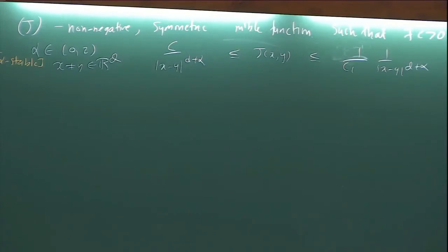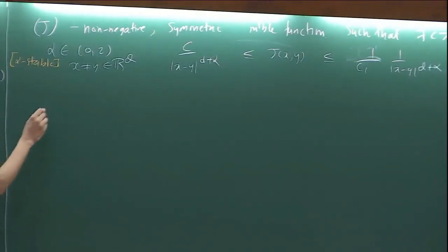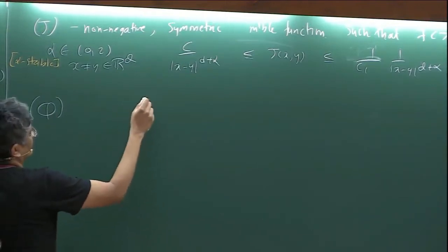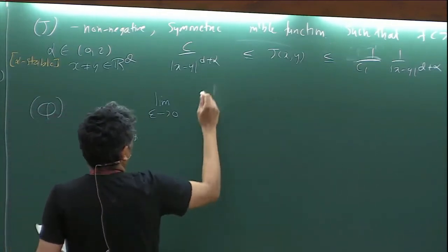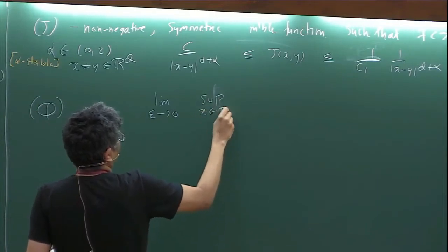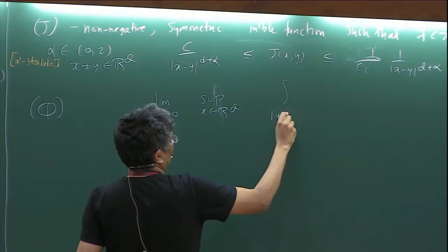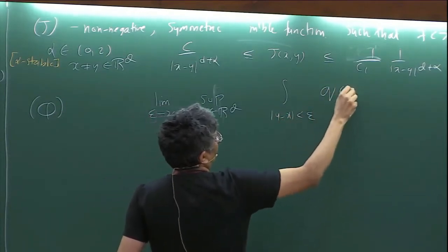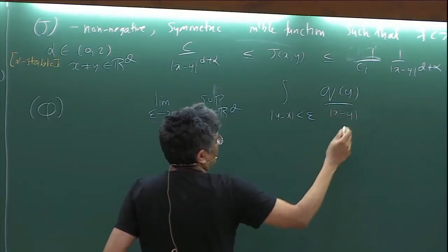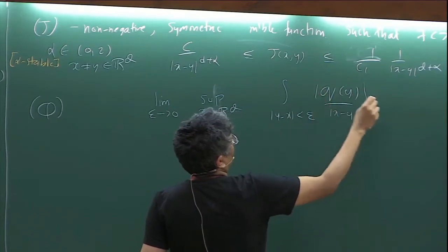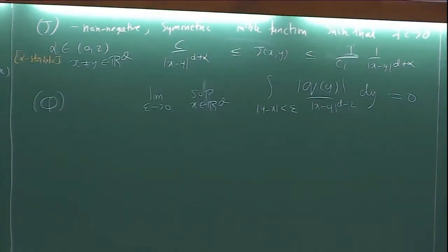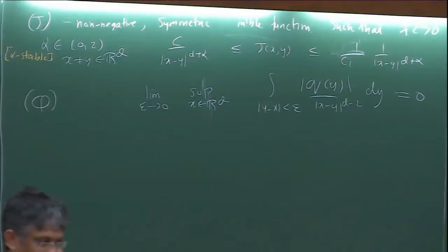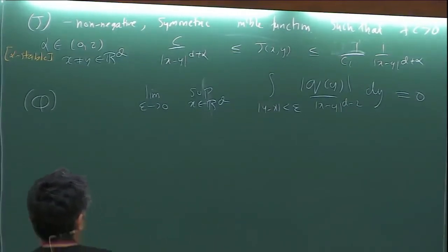I'm thinking of a Schrödinger operator with respect to L, with potential function q. The function q is in the Kato class: the limit as ε → 0 of the supremum over all x in R^d of the integral of q against what Frank called the Newton potential over a ball of radius ε around x goes to 0. This is the Kato class assumption.